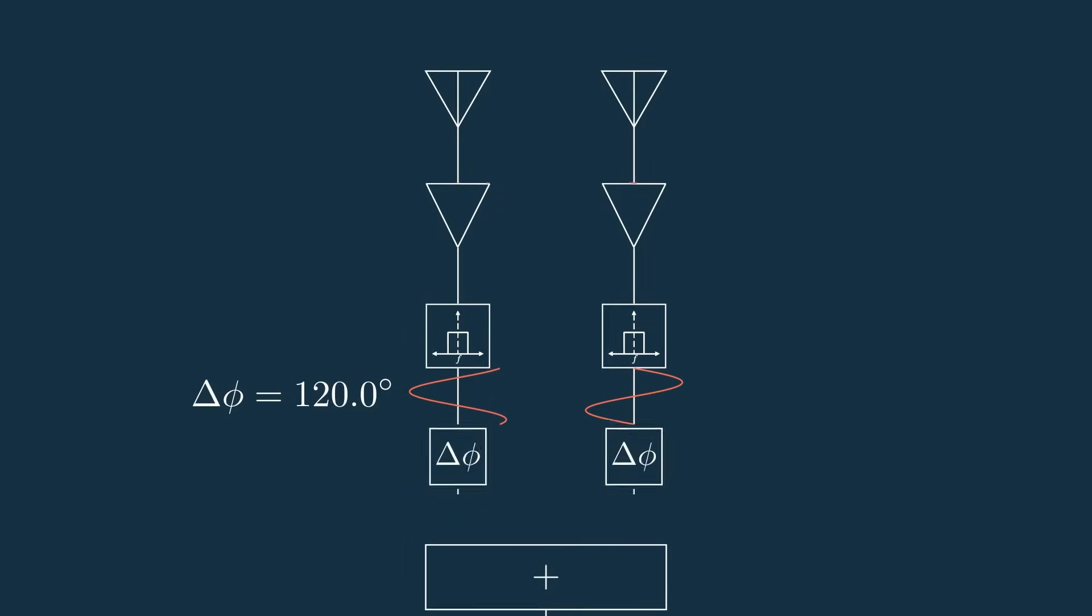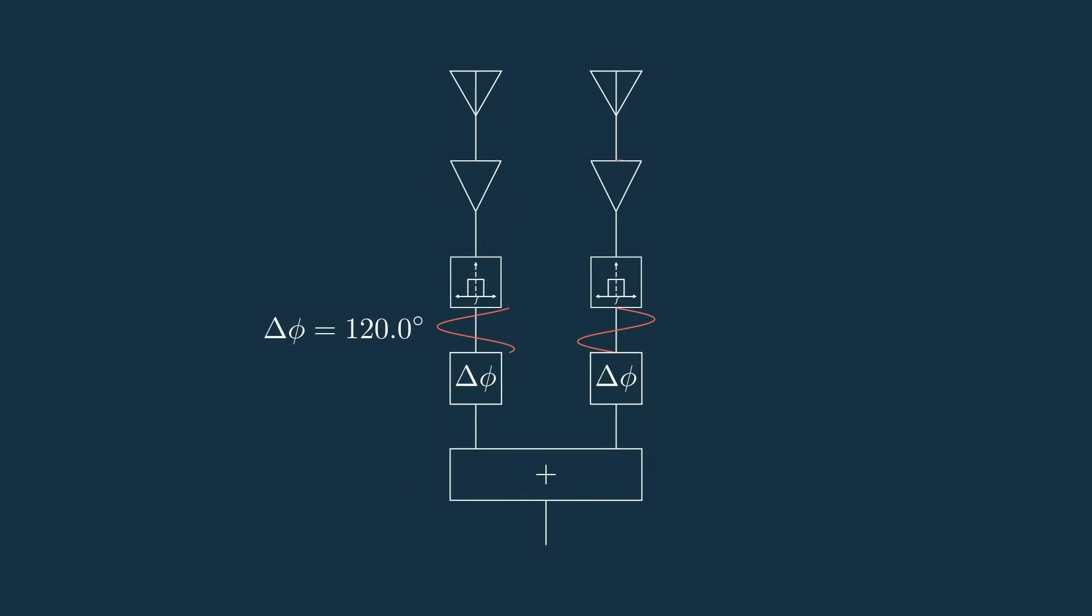So let's add another component before the combining stage called a phase shifter. Using this, we can artificially add a phase shift to both of these signals. If beforehand we knew the phase shift between the signals coming in from the antennas, we could add the opposite of that to the left phase shifter and get the signals back in phase. So then when we hit the combining stage again, we're back to 100% constructive combining, and we again get a larger amplitude.